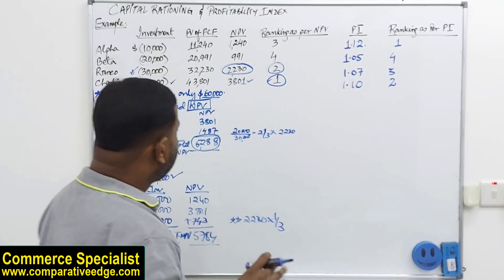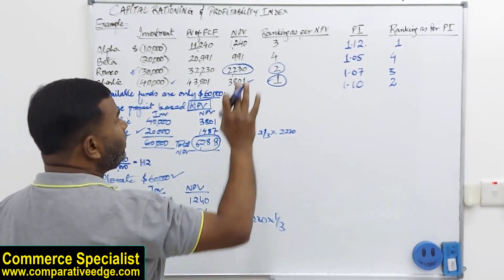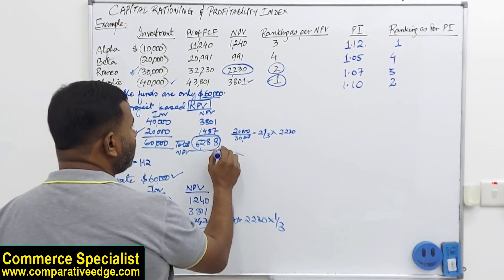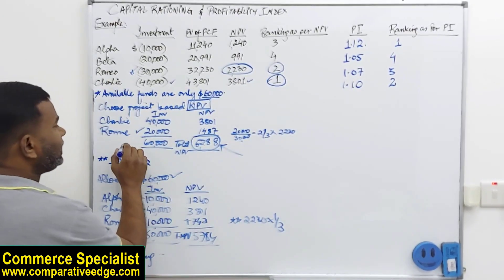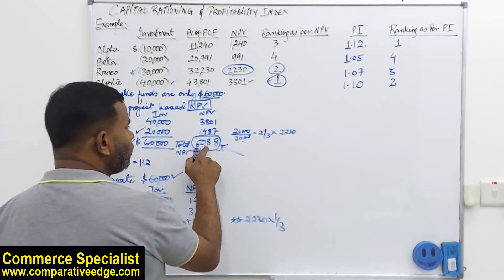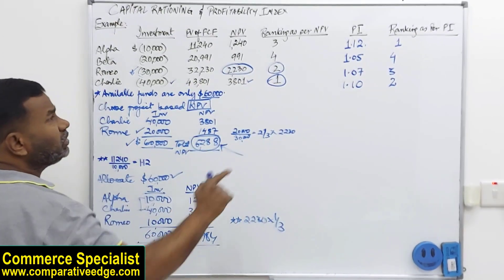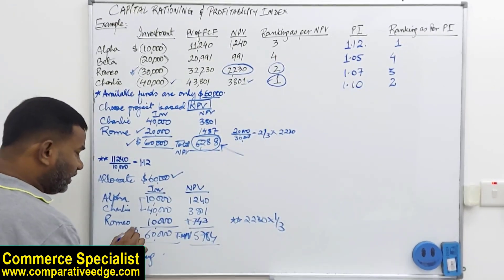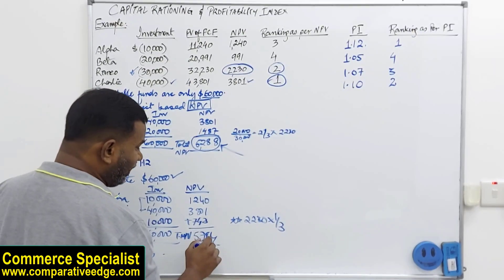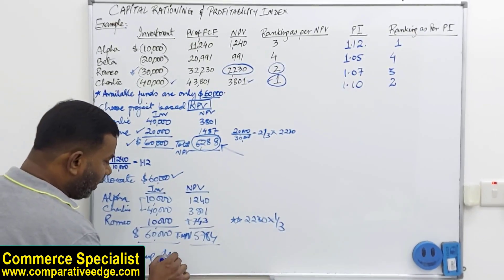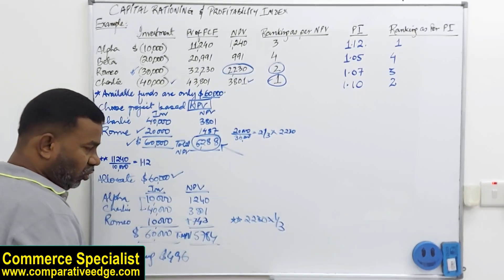So if you look at, when we are using NPV as our ranking criteria, we are making a total NPV from investing 60,000 US dollars, we are making a total NPV of 5,288. But when we are using profitability index as our criteria for investment and investing 60,000, our total NPV comes to 5,784. So that helps us to save 496 dollars.